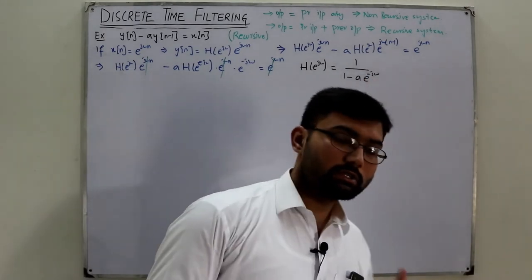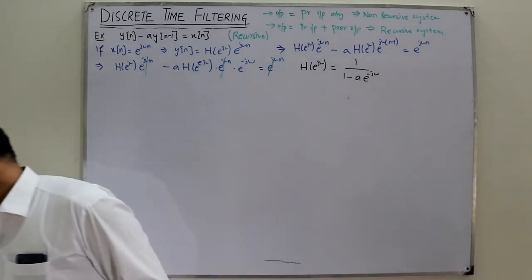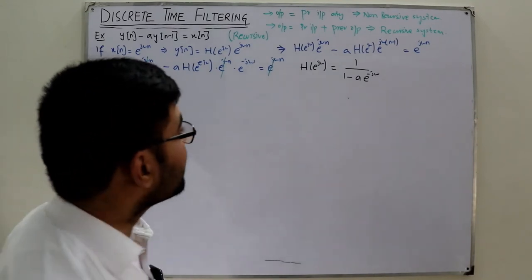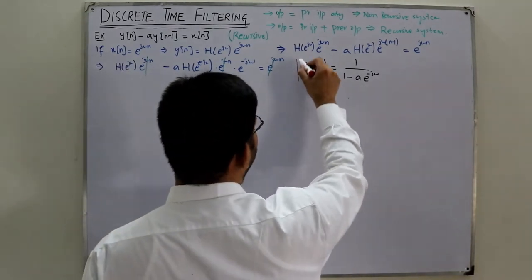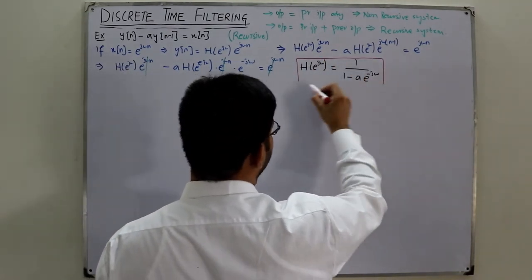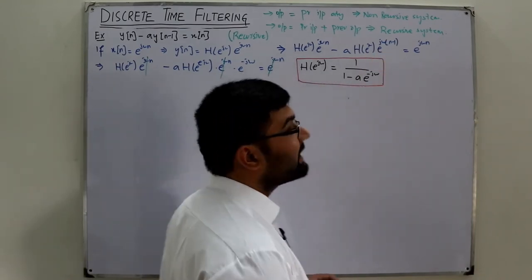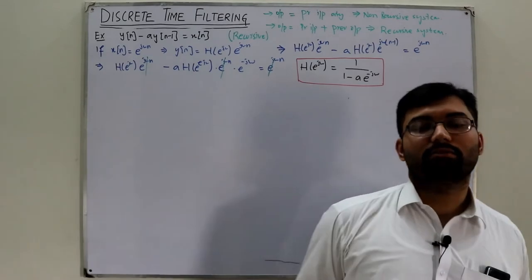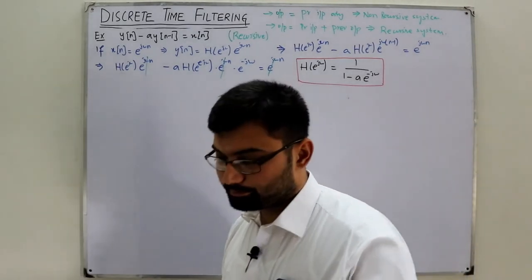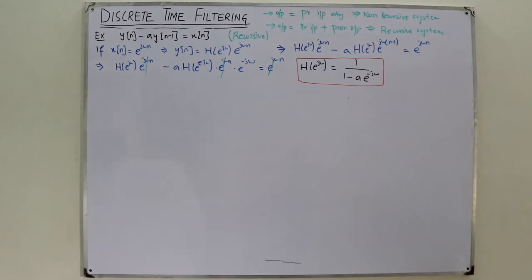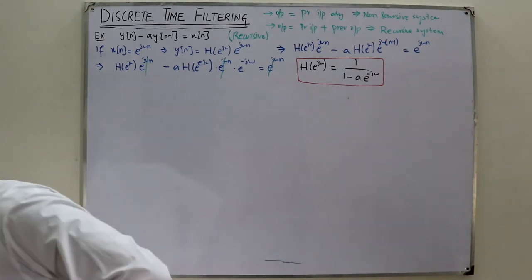The type of filter depends on the value of the constant a. You choose a proper value of a, then draw the graph of |H(e^jω)| versus ω. A graphical tool like MATLAB is recommended for this.